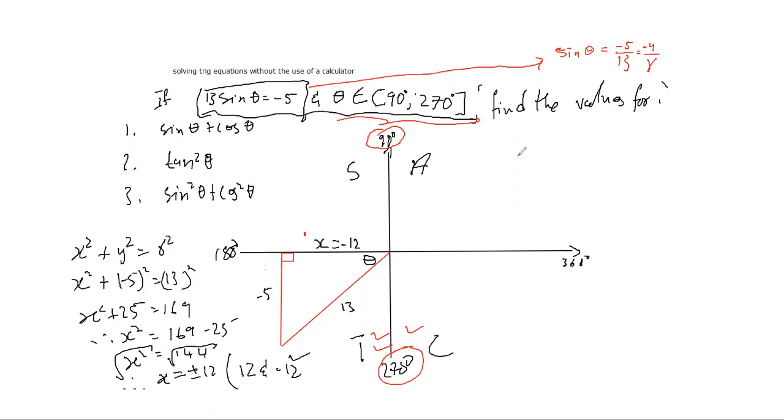Finally, we can now get an expression for sine theta plus cos theta. We know already that sine theta is minus 5 over 13, and cos theta is adjacent which is minus 12, and the hypotenuse remains 13. So this whole thing is minus 17 over 13.